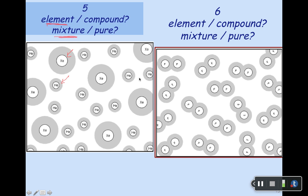Right box, number six: mixture or pure? Looking around, this one has two fluorines together — it has a chemical formula, and there's only one kind of thing in this box, so apparently this is a pure substance. Is it an element or a compound? There are two atoms together, but there's only one kind of atom present, so this is an element. It occurs as molecules, but that doesn't mean it's not still an element.